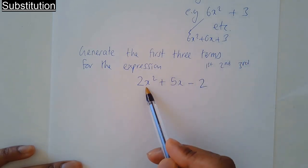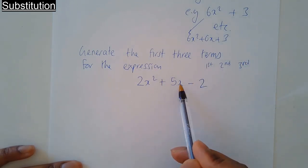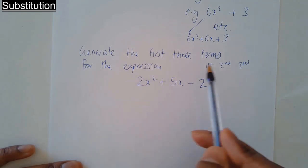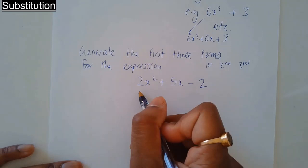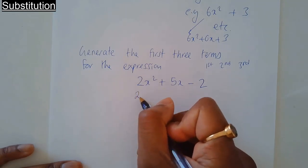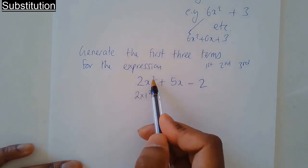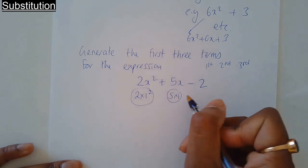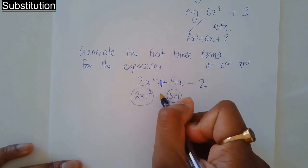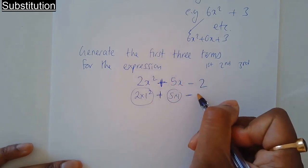So replace the x with 1 and then see what value comes out, and then replace it with 2, then replace with 3. We'll start with 1. Replace x with 1. Don't forget the plus symbol, and don't forget minus 2.